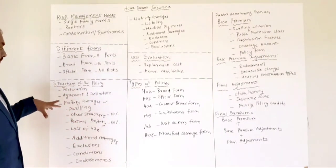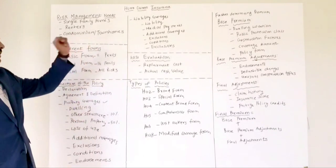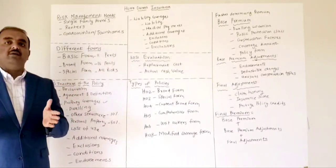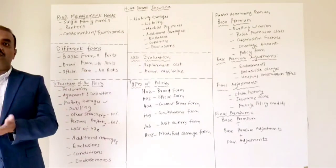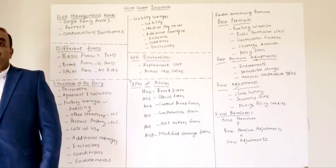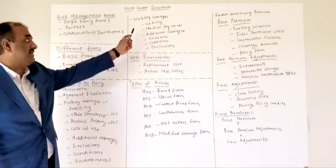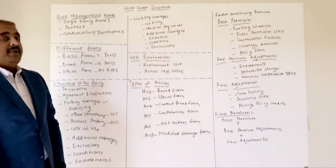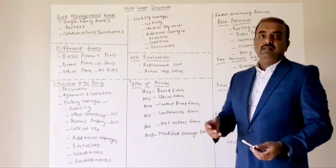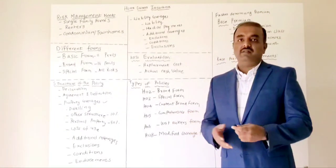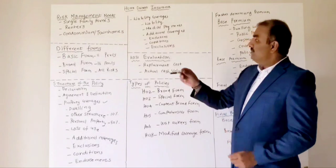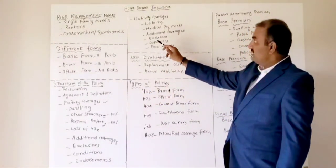Coming to liability coverage — as mentioned, liability is not for you; it is for your neighbors who are impacted by your negligence. For example, if a tree outside your home falls and damages your neighbor's patio, you can access liability coverage to make a payment to your neighbor. Medical payments coverage applies when, say, your neighbor's kids are playing at your home, they fall and injure themselves — you can access medical payments so that proper treatment can be given to them.